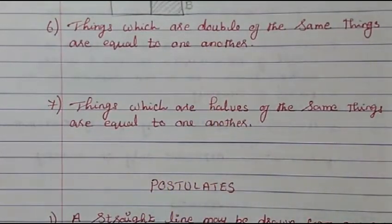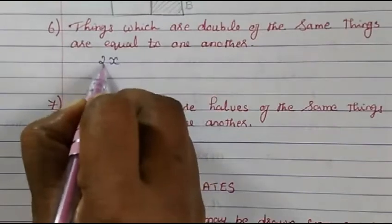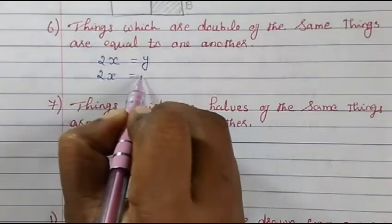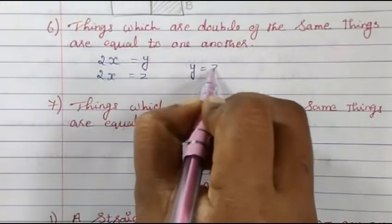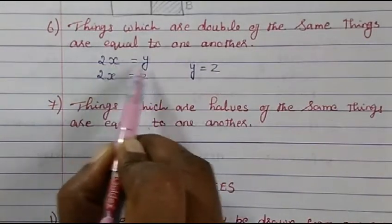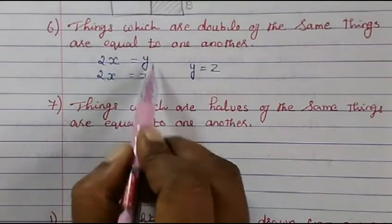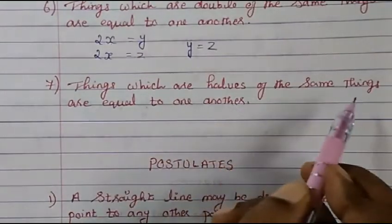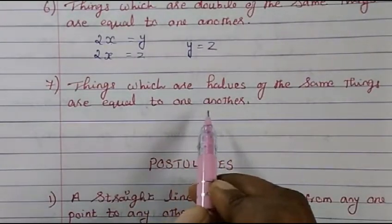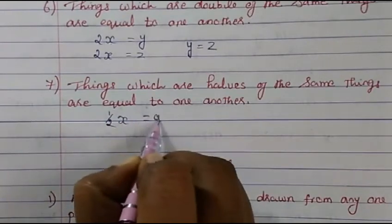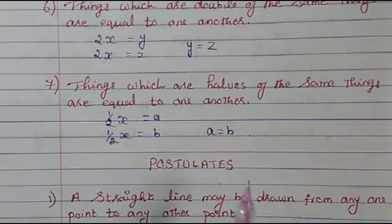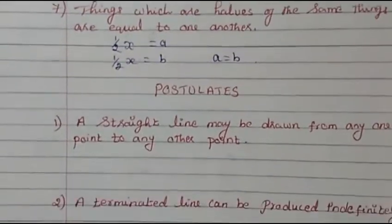The sixth axiom: things which are double of the same things are equal to one another. For example, if double of X equals Y and double of X equals Z, then Y equals Z. The seventh axiom: things which are halves of the same things are equal to one another. If half of X equals A and half of X equals B, then A equals B.